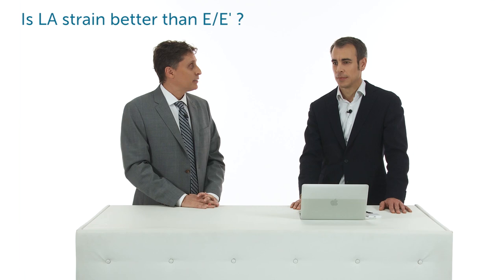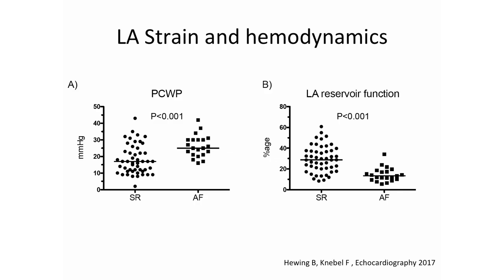I think we have to stick to the traditional parameters, but maybe incorporate this new parameter. Recently we compared invasive hemodynamic measurements — wedge pressure measurements in patients in sinus rhythm and atrial fibrillation — to LA strain. In patients with sinus rhythm, LA function is still preserved, but in patients with atrial fibrillation and higher wedge pressure, the LA strain is at a very low level. So it even correlates with hemodynamic parameters.